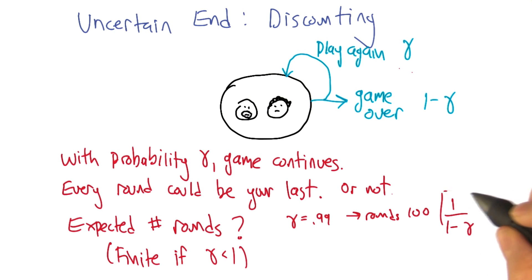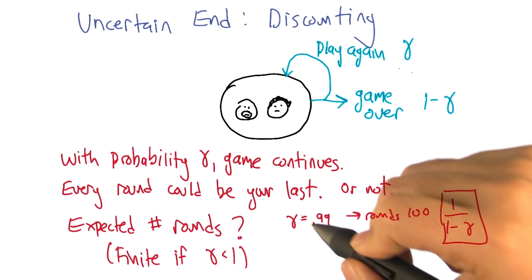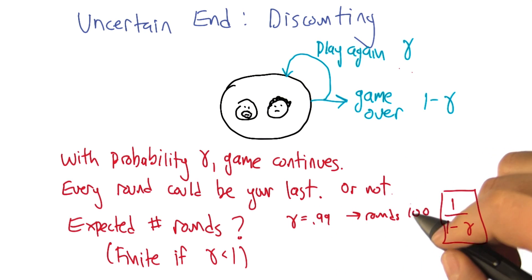So yeah, so this is the expected number of rounds, and so that means, so as you said, if gamma is 0.99, it's 100 rounds. And we already reasoned that at 100 rounds, the whole thing falls apart. Right.